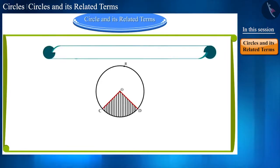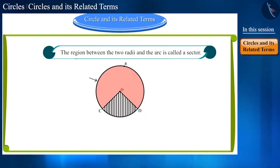Friends, in a circle, if two radii are made in this way, then the area between these radii and the arc is called sector. This large part is major sector and small part is minor sector.